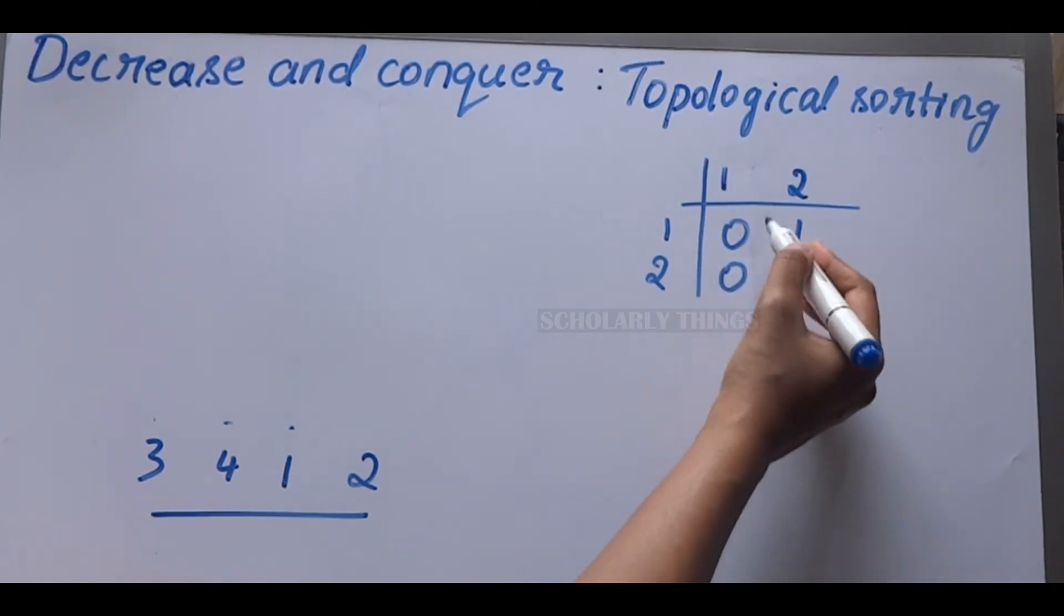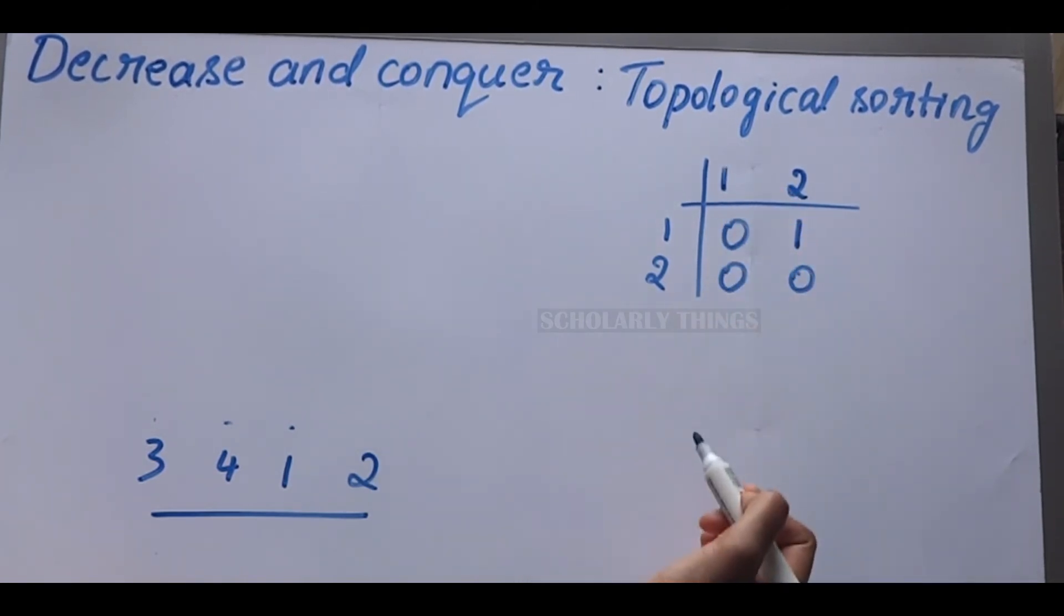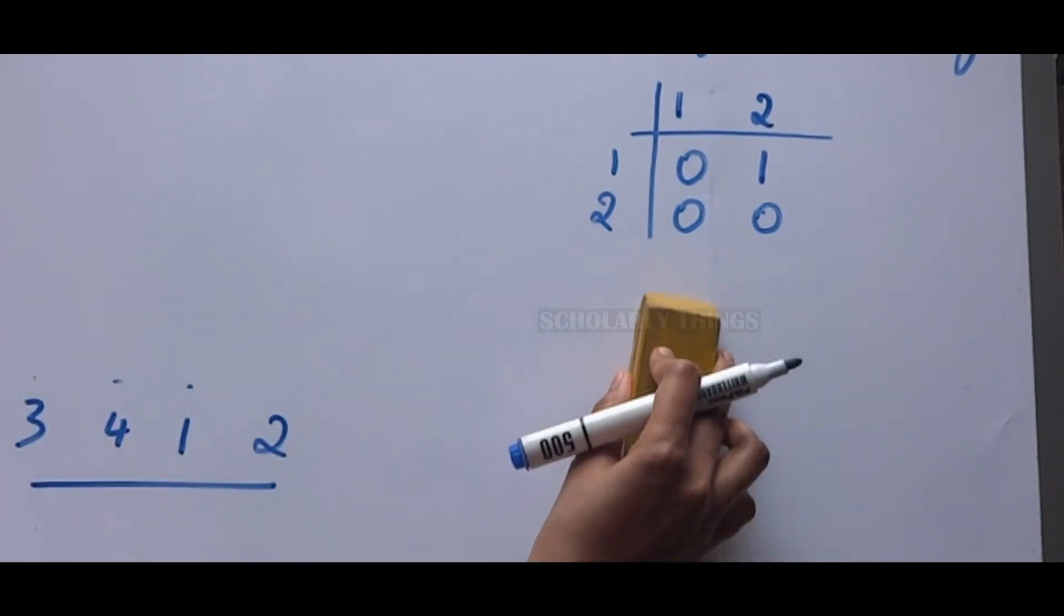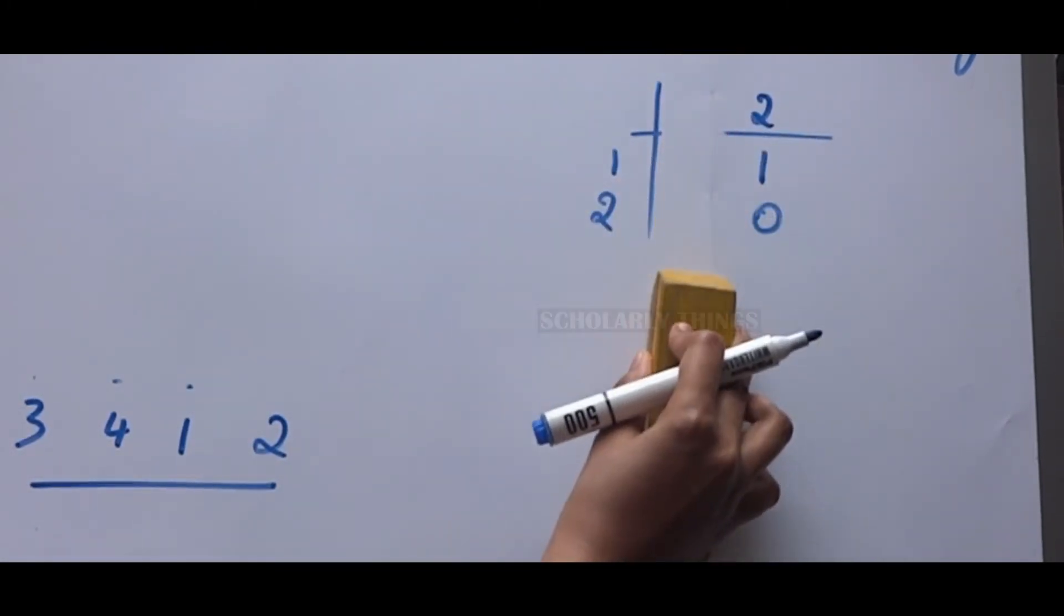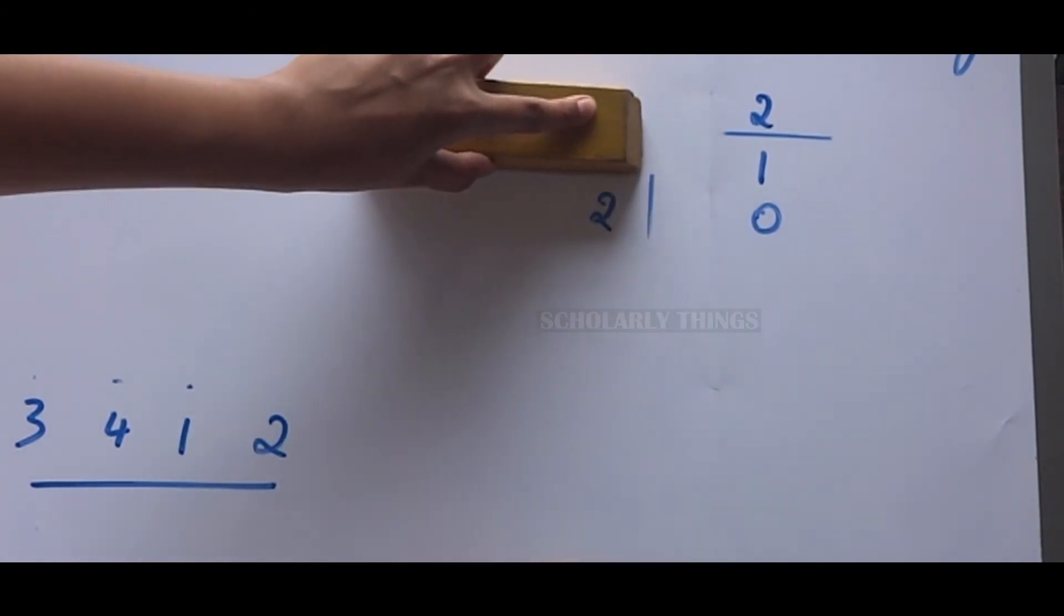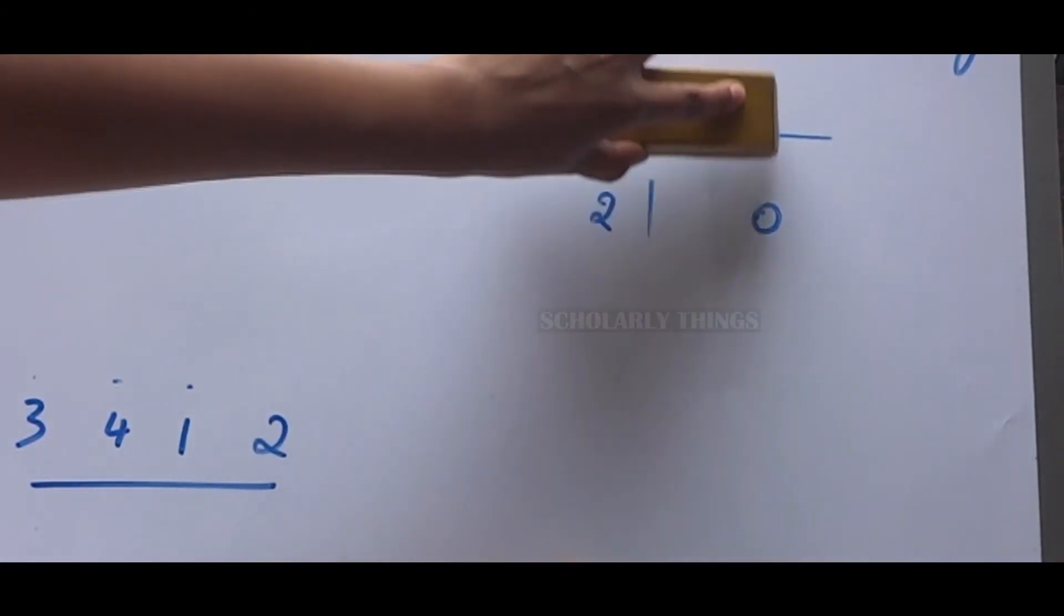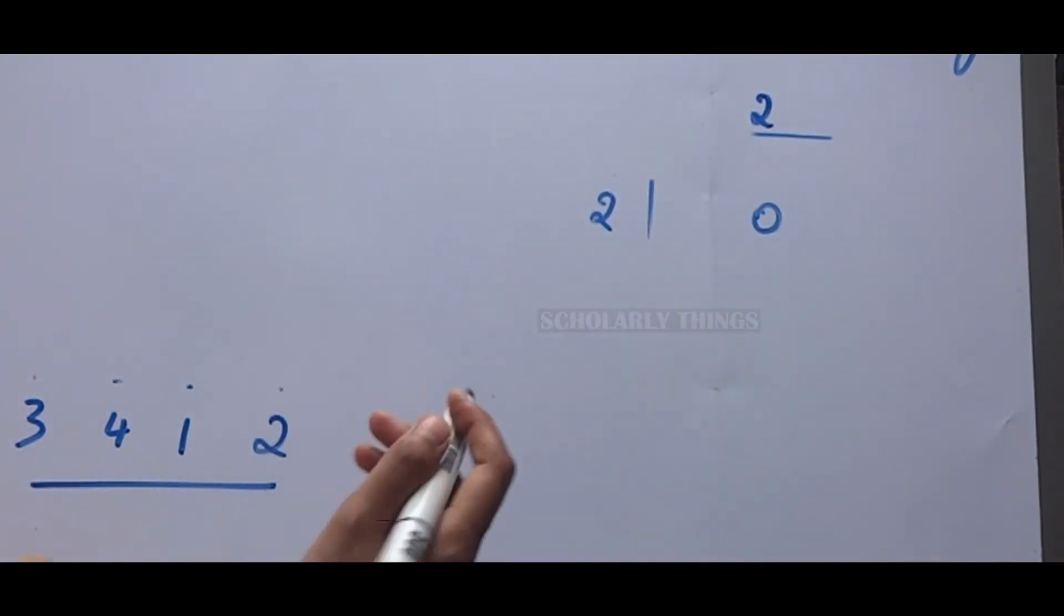Sum of elements in column 1 is 0. So remove that particular column and the corresponding row. The last one is 2. Remove column and row.